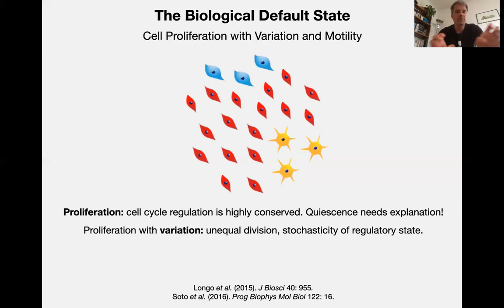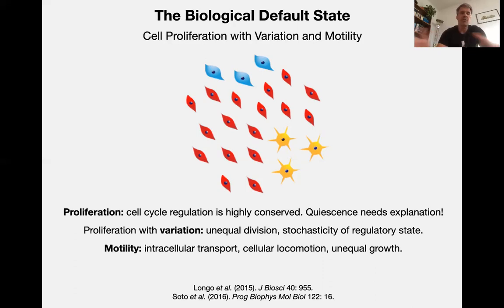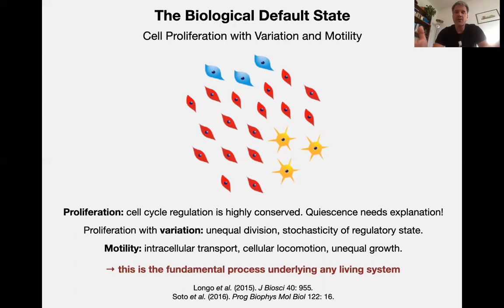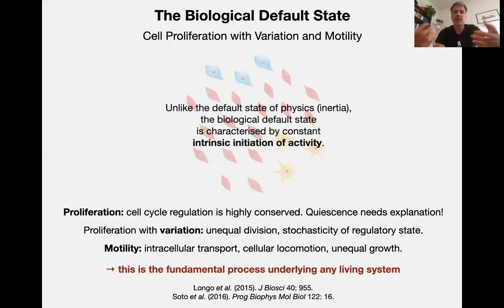What this immediately tells you is that you don't need to explain cell division — you need to explain when cells don't divide, which becomes important when we talk about multicellular organisms. There is variation in proliferation because cells never divide precisely equally, due to the stochastic nature of the underlying processes. This is the fundamental process underlying any living system. It has a default state somewhat like a moving object in Newtonian physics — moving in a straight line without acceleration — but it is very different because the biological default state is characterized by constant intrinsic initiation of activity from these work-constraint cycles.